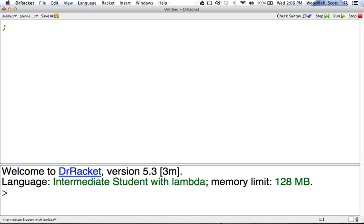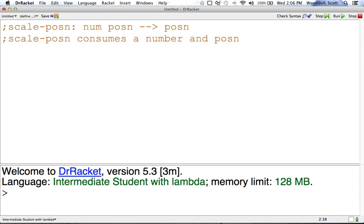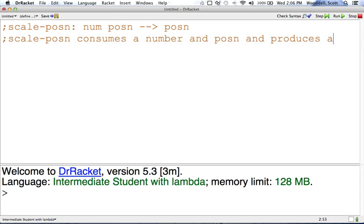Once again, we have our contract, scalePosition. It takes in a number and a position and produces a position. So scalePosition, if I could type, consumes a number and position and produces a number.